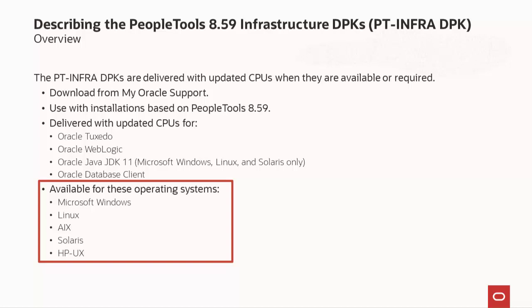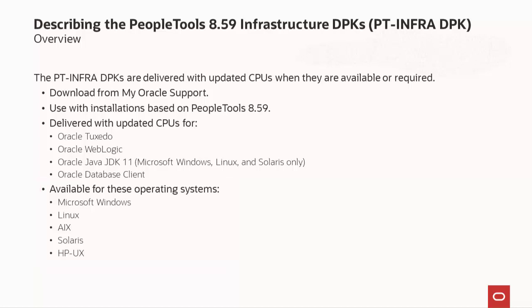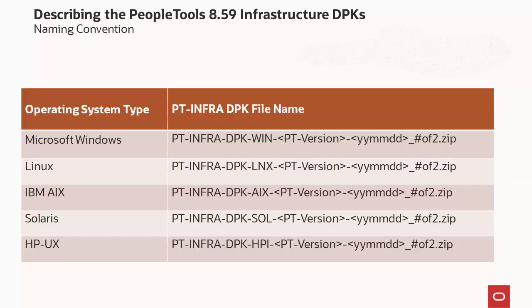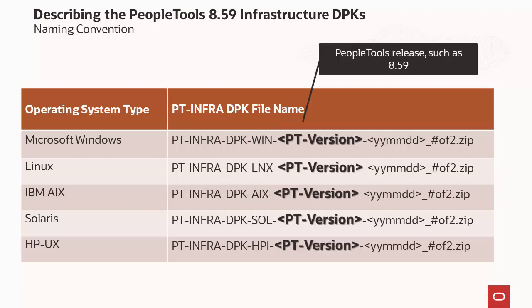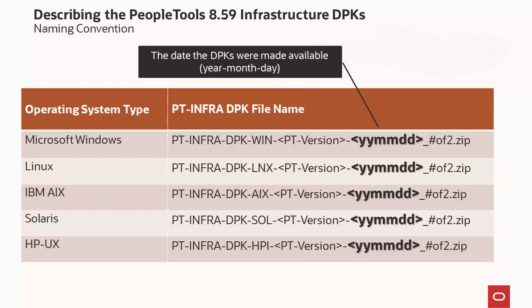Oracle JDK is included only for Windows, Linux, and Solaris operating systems. The PT-ENFR DPK names begin with PT-ENFR DPK followed by descriptive abbreviations. The abbreviations for operating system types include WIN for Microsoft Windows, LNX for Linux, AIX for IBM AIX, SOL for Solaris, and HPI for HP-UX. Next is the PeopleTools release, currently 8.5.9, then the date the DPKs were made available in the format year, month, day.